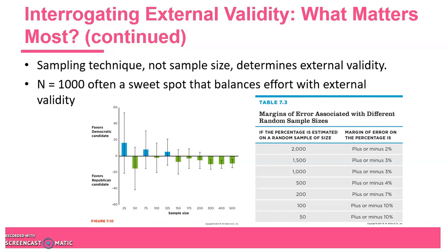It may seem counterintuitive, but the sampling technique is actually more important than getting a large N when making a frequency claim. There's kind of a sweet spot at N of one thousand — getting more people beyond that usually doesn't yield much additional precision. As shown in this graph, the error bars shrink as you add more people, dropping drastically as you approach a thousand, but then leveling off. So an N of one thousand tends to balance the money and effort of data collection against external validity.